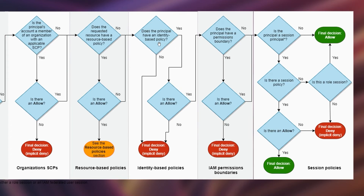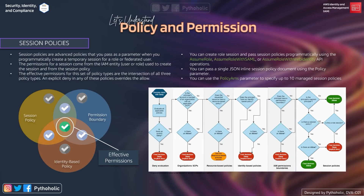If there is no role session, the request is implicitly denied. If there is a role session, the final decision is allowed. Similarly, if the principal is not a session principal, does not have a permission boundary, and has an allow in the identity-based policy, those conditions are satisfied and it will automatically be allowed. For the session principal, if there is a session policy with an allow, the final decision is allowed; otherwise it goes with implicit deny.